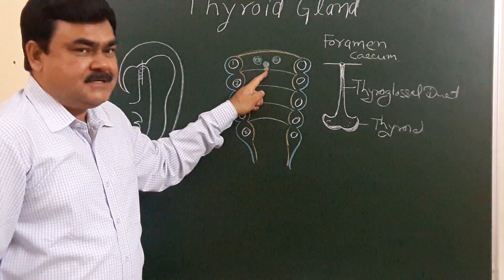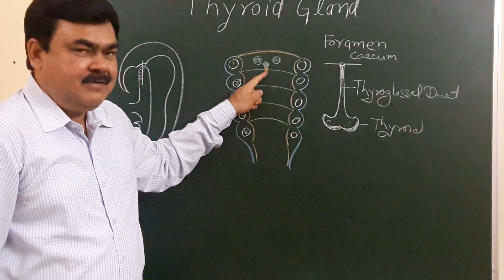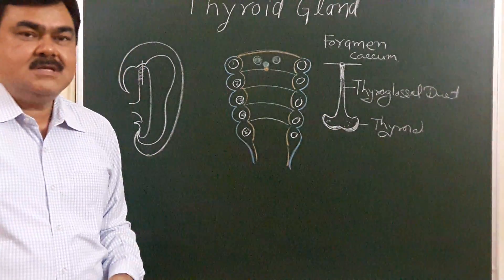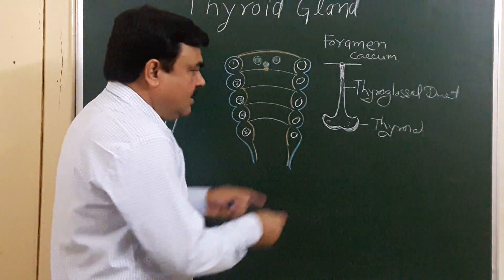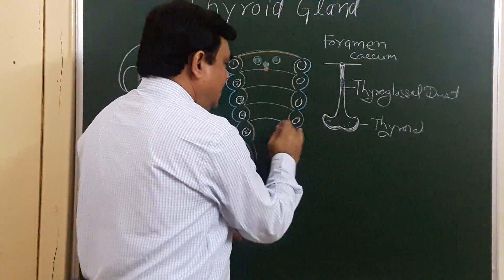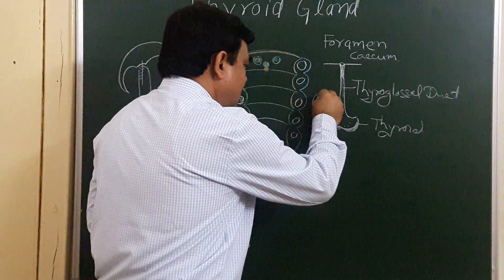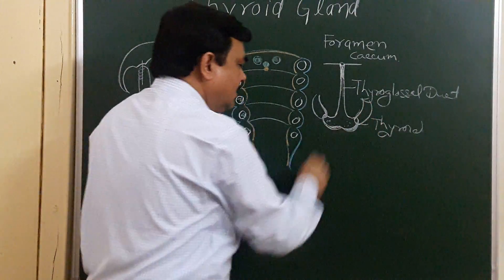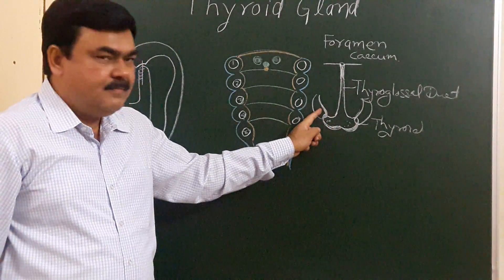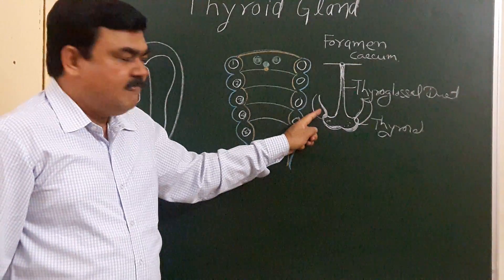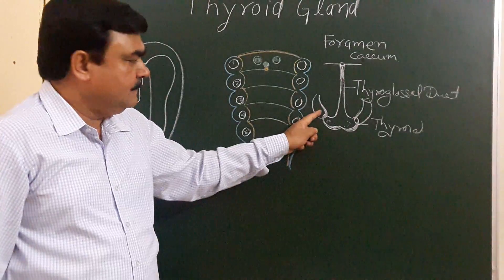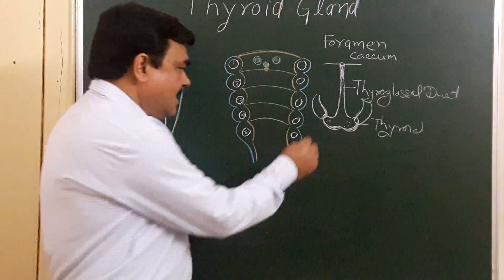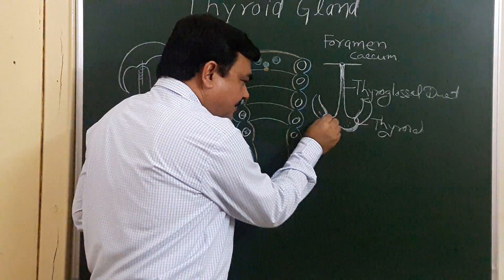This thickening appears during the third week of intrauterine life and the thyroglossal duct grows downward. It divides into two lobes during the seventh week of intrauterine life. Another structure arises from the fourth pharyngeal pouch — it forms the ultimobranchial body, or caudal pharyngeal complex, which joins the developing thyroid gland. This ultimobranchial body contributes parafollicular cells, or C cells, which are incorporated into the thyroid gland.